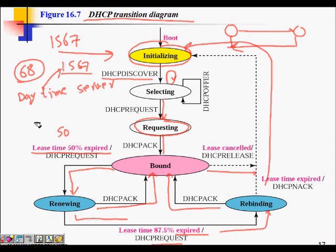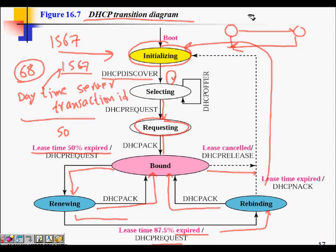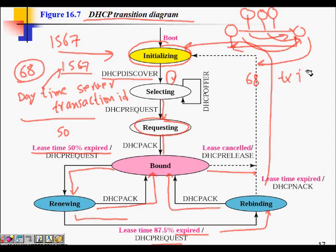If there is a power shutdown and all machines start at the same time, they all send DHCP requests simultaneously. When the broadcast reply arrives at port 68, each machine's transaction ID is different, so each machine can identify its own assigned IP address from among all the replies. This is how DHCP handles simultaneous requests from multiple clients.